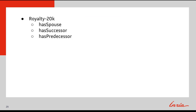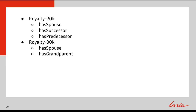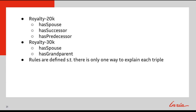In this work, we construct two datasets, the royalty20k and royalty30k, focusing on four unique relations: has spouse, has successor, has predecessor, and has grandparent. Included with every triple in the training and test set is the explanation for why a link could exist between the two entities.